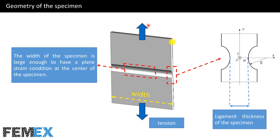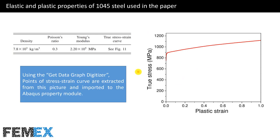This is a schematic of the geometry of the specimen. The width of the specimen is large enough to have a plane strain condition at the center of the specimen, and we apply tensile load to this specimen. Mechanical properties are presented in the paper.